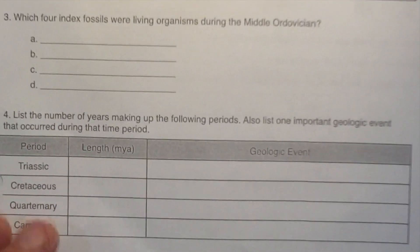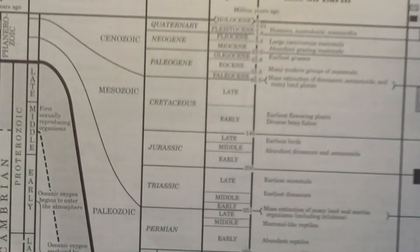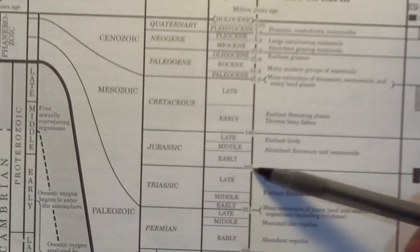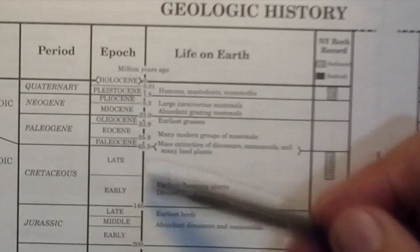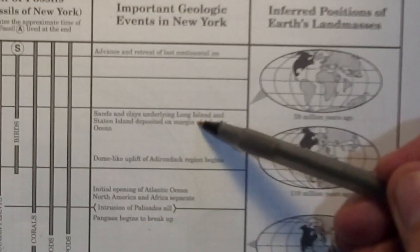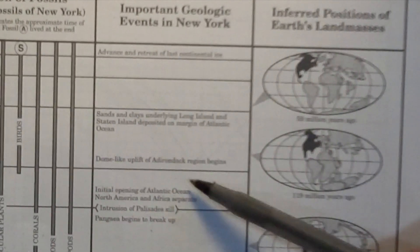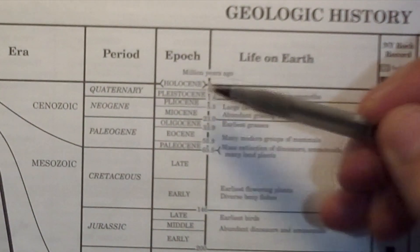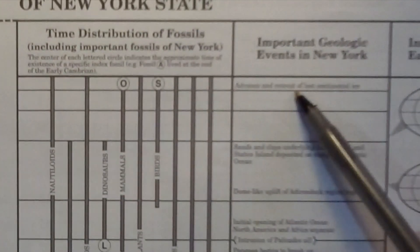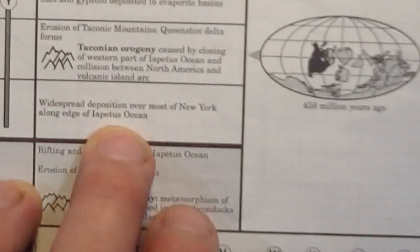Number four: list the number of years making up the following periods and the important geological event. The Triassic begins and ends here — 251 minus 200 gives 51 million years; the event is Pangea breaks up. The Cretaceous is 146 minus 65.5, giving 80.5 million years; the event is sands and clays underlying Long Island and Staten Island deposited, or the dome-like uplift of the Adirondacks. The Quaternary is 1.8 million years to present; the event is the advance and retreat of the last continental ice sheet. The Cambrian is 542 minus 488, giving 54 million years; the event is widespread deposition over most of New York along the edge of the Iapetus Ocean.